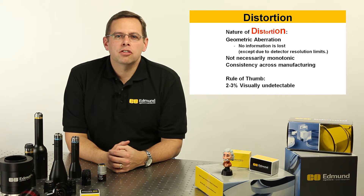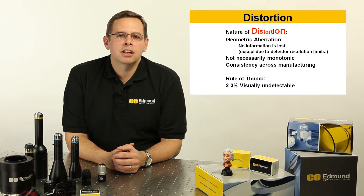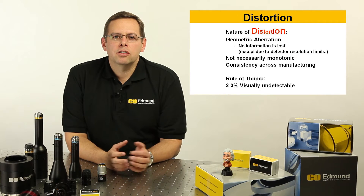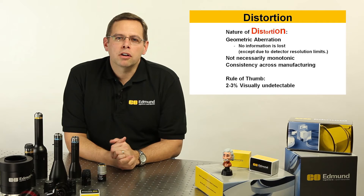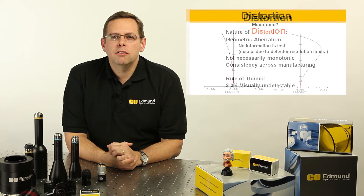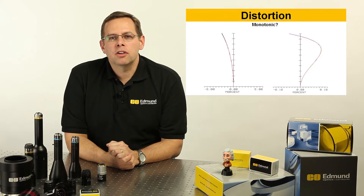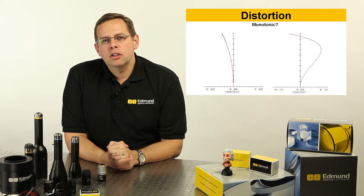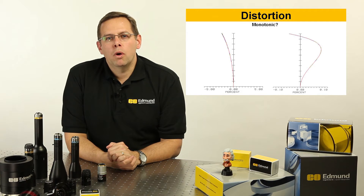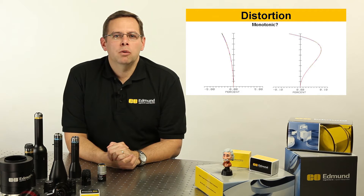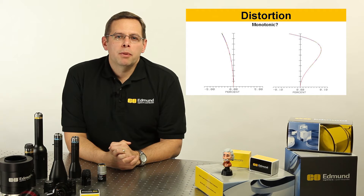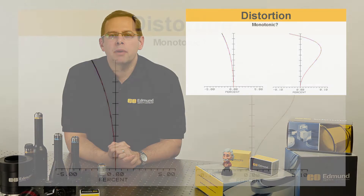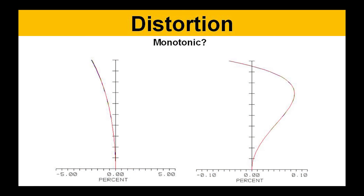Now, distortion is not necessarily a linear property. It has some quadratic formulas to it and in some cases even bends back on itself. If you look at the graphs shown, you'll see two different types of distortion: one is monotonic, continuing all in one direction, and the other is actually curving back on itself to achieve a low distortion system across the field.